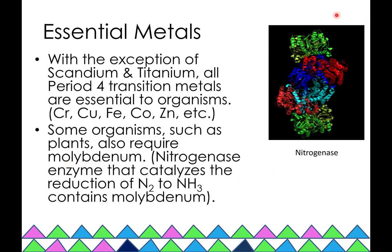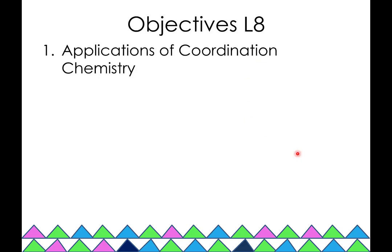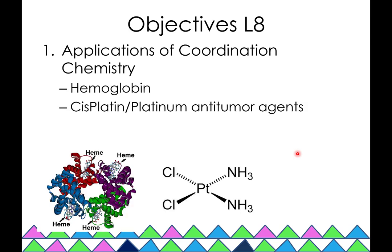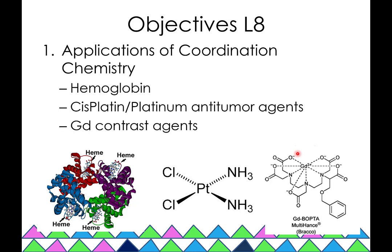One example is nitrogenase, an enzyme which catalyzes the reduction of nitrogen to ammonia. This particular enzyme contains molybdenum. In this lecture, we're going to cover three examples: hemoglobin, cisplatin, and gadolinium contrast agents.